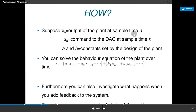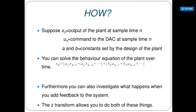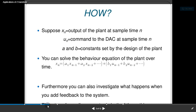This kind of physical feedback control system can be implemented using Z-transform. Now, suppose x(n) is the output of the plant at sample time n, u(n) is the command to the digital-to-analog converter at sample time n, and a and b are constants set by the design of the plant. The behavior equation of the plant is: x(n) = a1·x(n−1) + a2·x(n−2) + ... + b1·u(n−1) + b2·u(n−2) + ... Furthermore, you can also investigate what happens when you add feedback to the system. The Z-transform allows you to do both of these things.